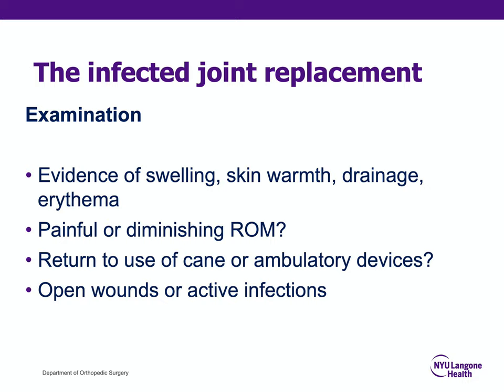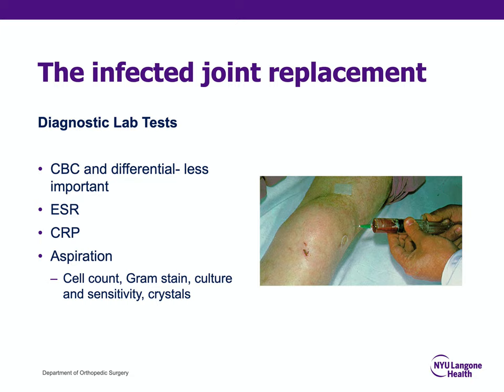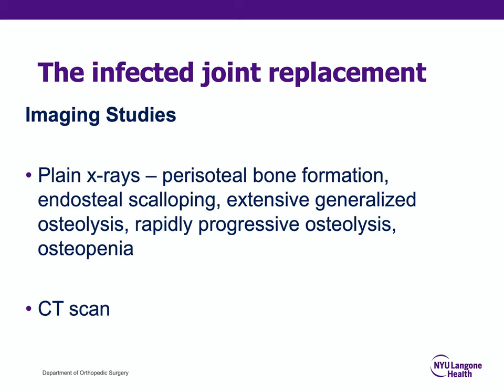A patient who begins using an ambulatory device after having gotten rid of it, or one with open wounds or active infections elsewhere, requires consideration of infection of the knee arthroplasty. Lab tests and aspiration will always be indicated if this is on the differential — ESR and CRP as well as aspiration sent for everything should be performed. Plain x-rays may show periosteal bone formation, endosteal scalloping, extensive generalized osteolysis, or rapidly progressive osteolysis, all pointing towards a septic etiology.